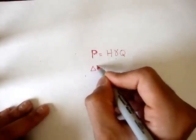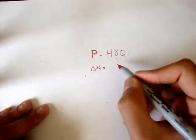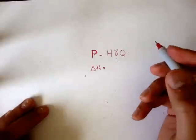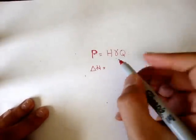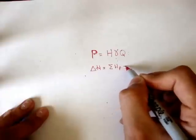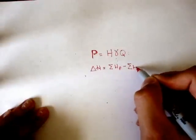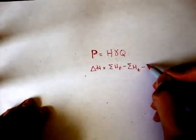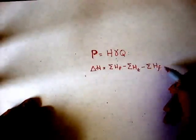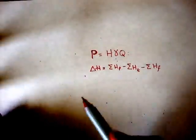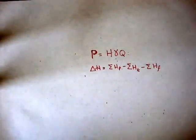We also need to know that the change in total energy head equals the summation of all pump heads minus the summation of all turbine heads minus any losses due to friction. These are the two formulas we'll be using for a while.